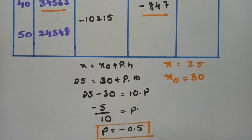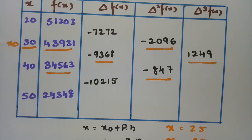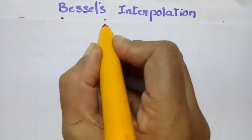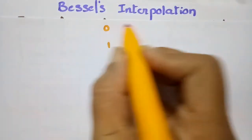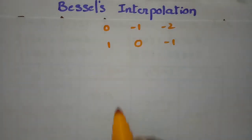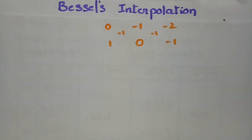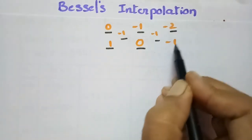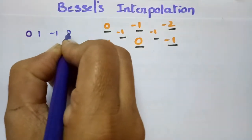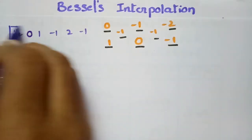Now I'll explain the logic to remember Bessel's formula. We write subscripts 0 and 1, then in decreasing order: 0, -1, -2. On the other side, 1, then decreasing: 0, -1. Keep minus 1s in between. This is one way to remember the Bessel's interpolation formula — take bisection values: double, single, double, single, double. In front, keep half.